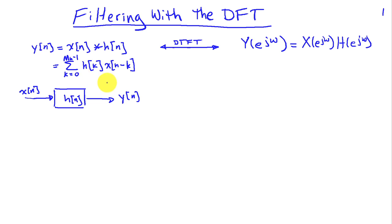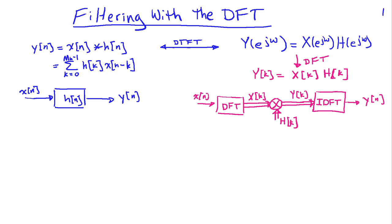It's fairly easy to do this in the time domain. We just have to add up these m_h numbers, the product of h[k] and x[n-k], and that gives us an output point for y. Now if we take the DFT, that's equivalent to sampling the DTFT, so we'll have Y[k] equals X[k] times H[k]. Thus I can think about a filtering operation in the frequency domain as taking x[n], applying the DFT to get X[k], then multiplying by H[k] to get Y[k], then taking the inverse DFT to get my output y[n].